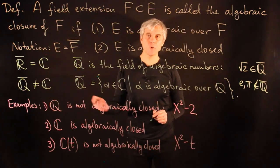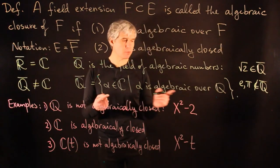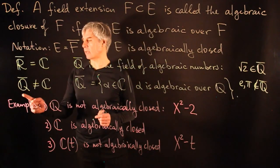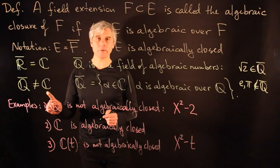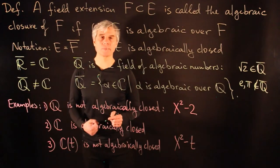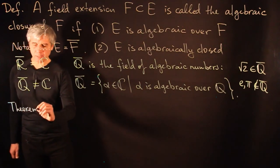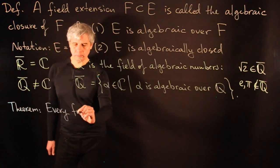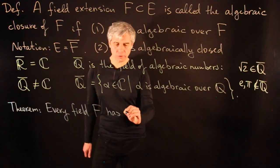Since the number of polynomials with rational coefficients is countable, the number of roots of these polynomials is also countable. So the algebraic closure of Q is countable, whereas the field of complex numbers is uncountable, so this equality Q̄ = C cannot hold. Our main theorem that we want to prove today is that every field has an algebraic closure.